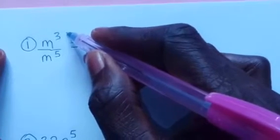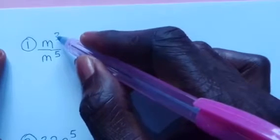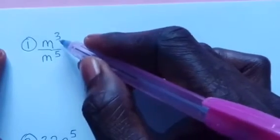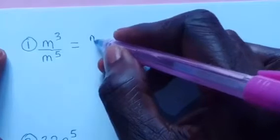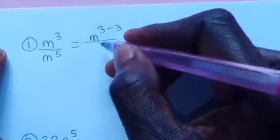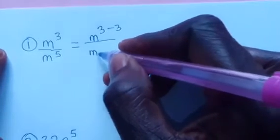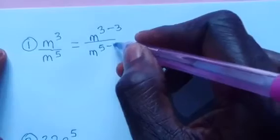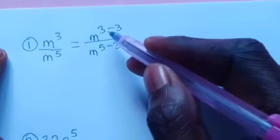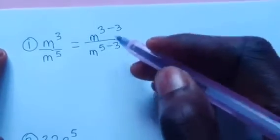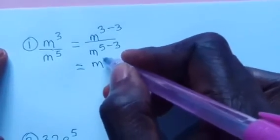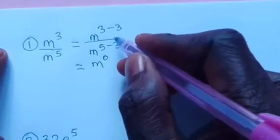You are going to subtract 3 from 3. The idea is so that we can obtain a 0 in the power, which will make the index become 1. So here we can say m power 3 minus 3, and we are going to do the same thing at the denominator — m power 5 minus 3. That is the first thing we do: subtract the lesser power from both powers.